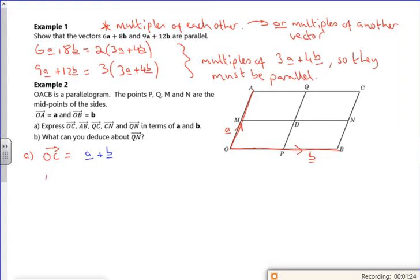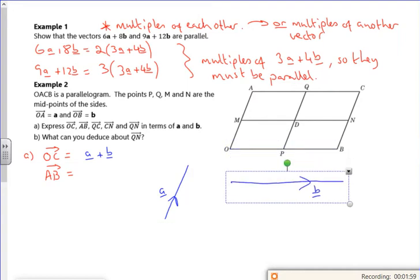Right, so let's have a look at AB then. Let me just move around the vectors. So I've got that one, which is A, which I can move away. And that one, which is B, which I can move around.